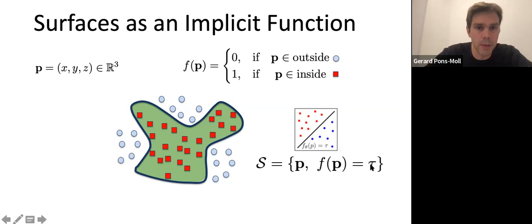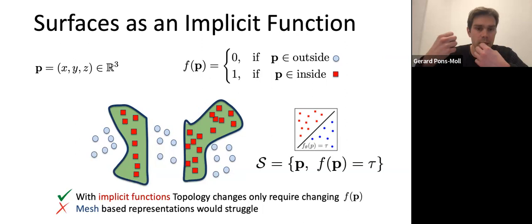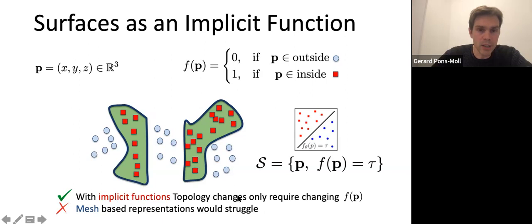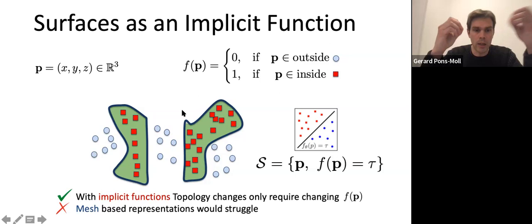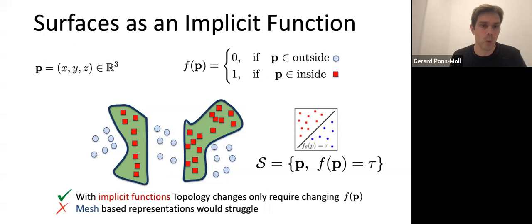Why is this representation particularly interesting? Because if you have a topology change — imagine you're tracking a cell or some object that changes topology — you can track this very easily by just keeping track of the changes of f. With implicit functions, topology changes require only changing f, and this can be done in a differentiable manner. With a mesh, this would be much more difficult because you'd have to track which vertices are connected to which others — quite difficult to differentiate through and a nightmare to implement.